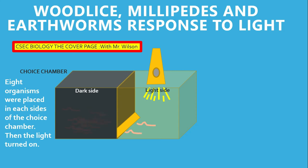Another worm has had enough of the brightly lit area — no privacy, exposure to predators, and exposure to desiccation, being dried out. As such, this organism is not going to stay there any longer and has moved to an area that is much darker and safer. There are three busy worms still not comfortable on the dark side, continuing to move, trying to find something better. Finally, the last worm in the lit area has had enough of the bright light and has moved away into the dark area, seeking cover.